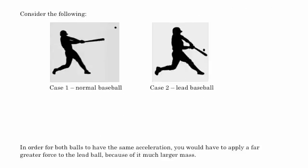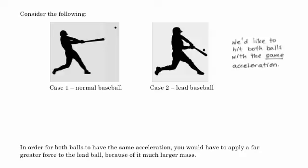So let's consider a real life example of these two things. So we'll consider two cases, playing baseball with a normal baseball and playing baseball with a lead baseball. And basically, we'd like to hit both balls with the same acceleration. We want to hit both the normal baseball and the lead baseball with the same acceleration. So what do we need to consider? Well, in the first case, we have some force one, and that's equal to the mass of the normal baseball, m1 times acceleration. And so we can rearrange so that we have acceleration, and that's equal to F1 over m1.